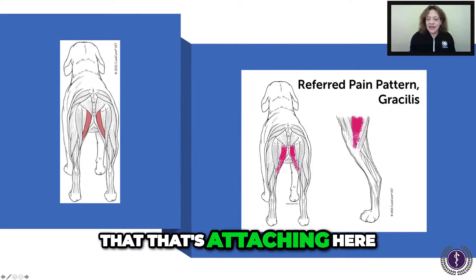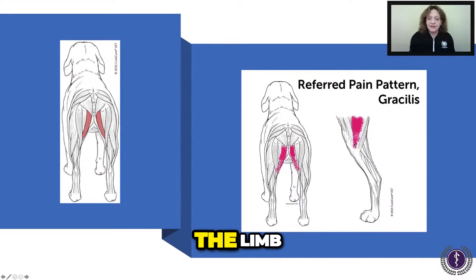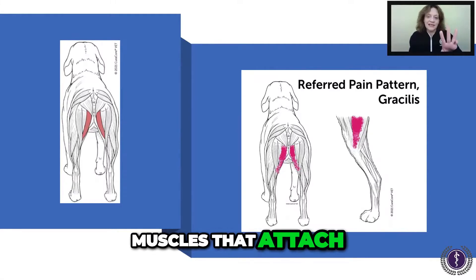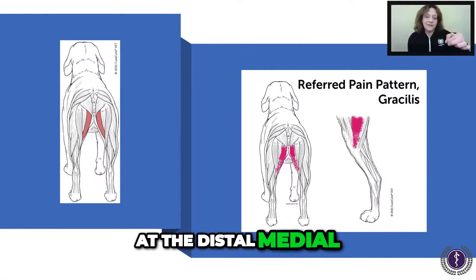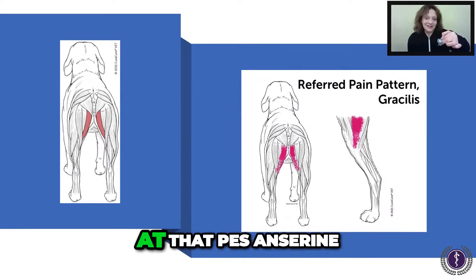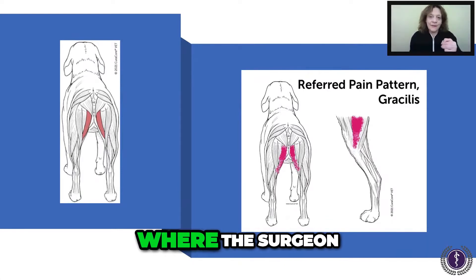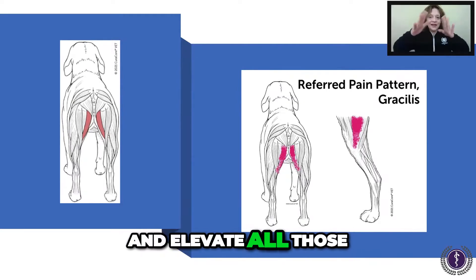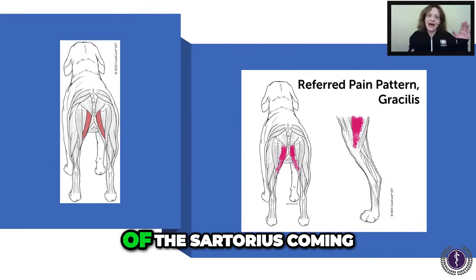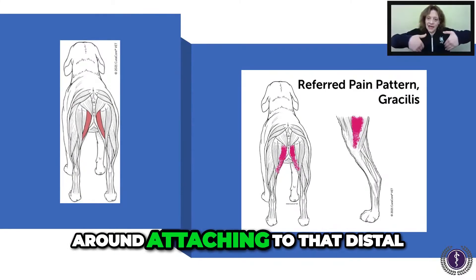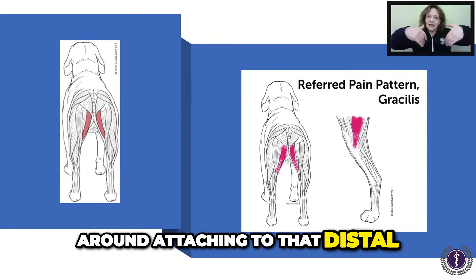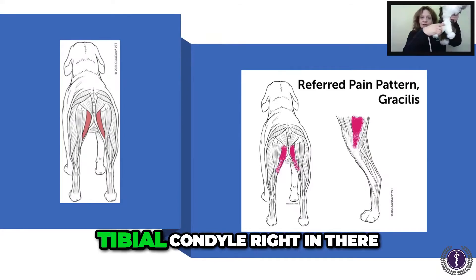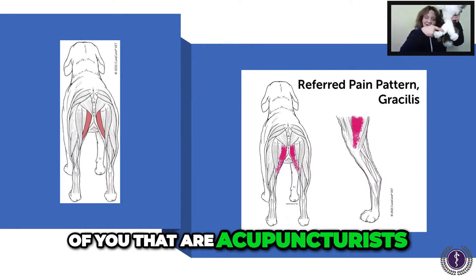You can see that it's attaching here — this is the medial aspect of the limb. Remember that the gracilis is one of the three muscles that attaches at the distal medial tibial condyle, at the pes anserine, where the surgeon is going to cut into the bone and elevate all those soft tissues. That's spleen nine for those of you that are acupuncturists.